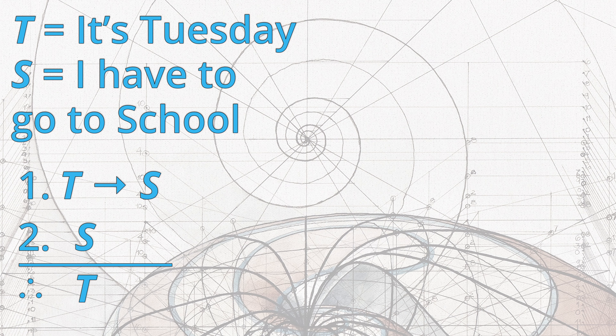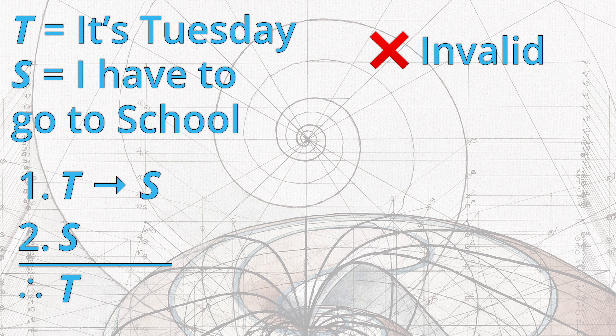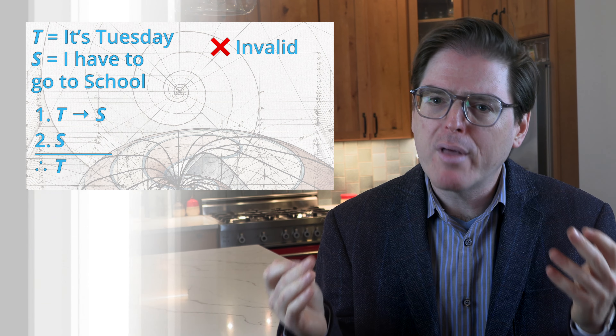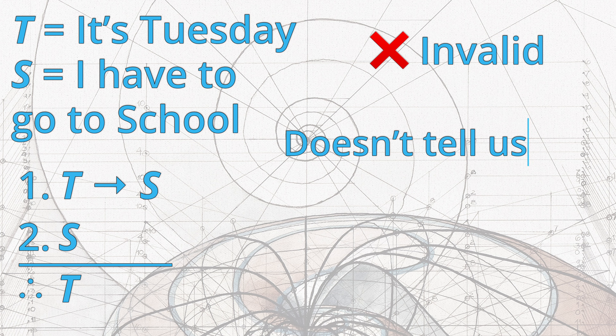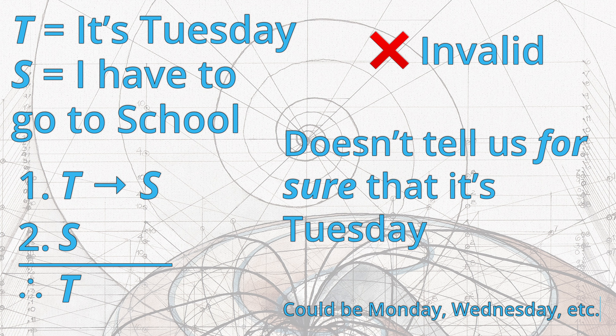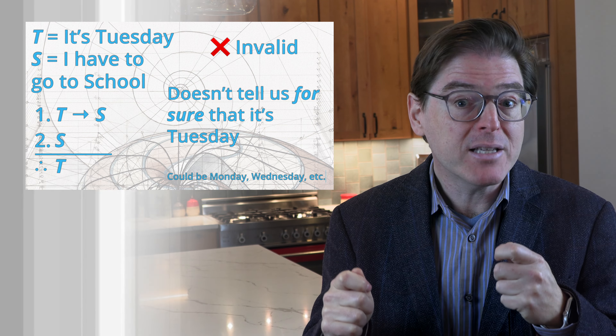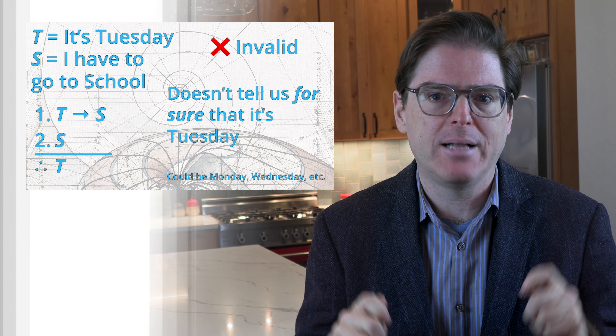What about the case where they tell you that you do need to go to school today? What can you conclude from that evidence? In that case, if T then S is true, and we learn that S is true. Does that tell us that today is Tuesday? No, it doesn't. Simply knowing that we need to go to school is compatible with other hypotheses as well — it could be Wednesday, for example. This argument — if T, then S; S; therefore T — is not valid.